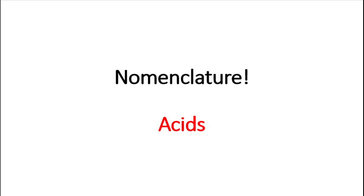Hello everyone. In this video I'm going to talk about acids — nomenclature of acids — the third group of compounds we need to work on their naming rules. If you remember, for ionic compounds and covalent compounds we had two different naming rules. For acids we are going to have another type of naming rules, but they are related to naming of ionic compounds, so I may ask you to remember that one for ionic compounds, and after that we are going to work on acids.